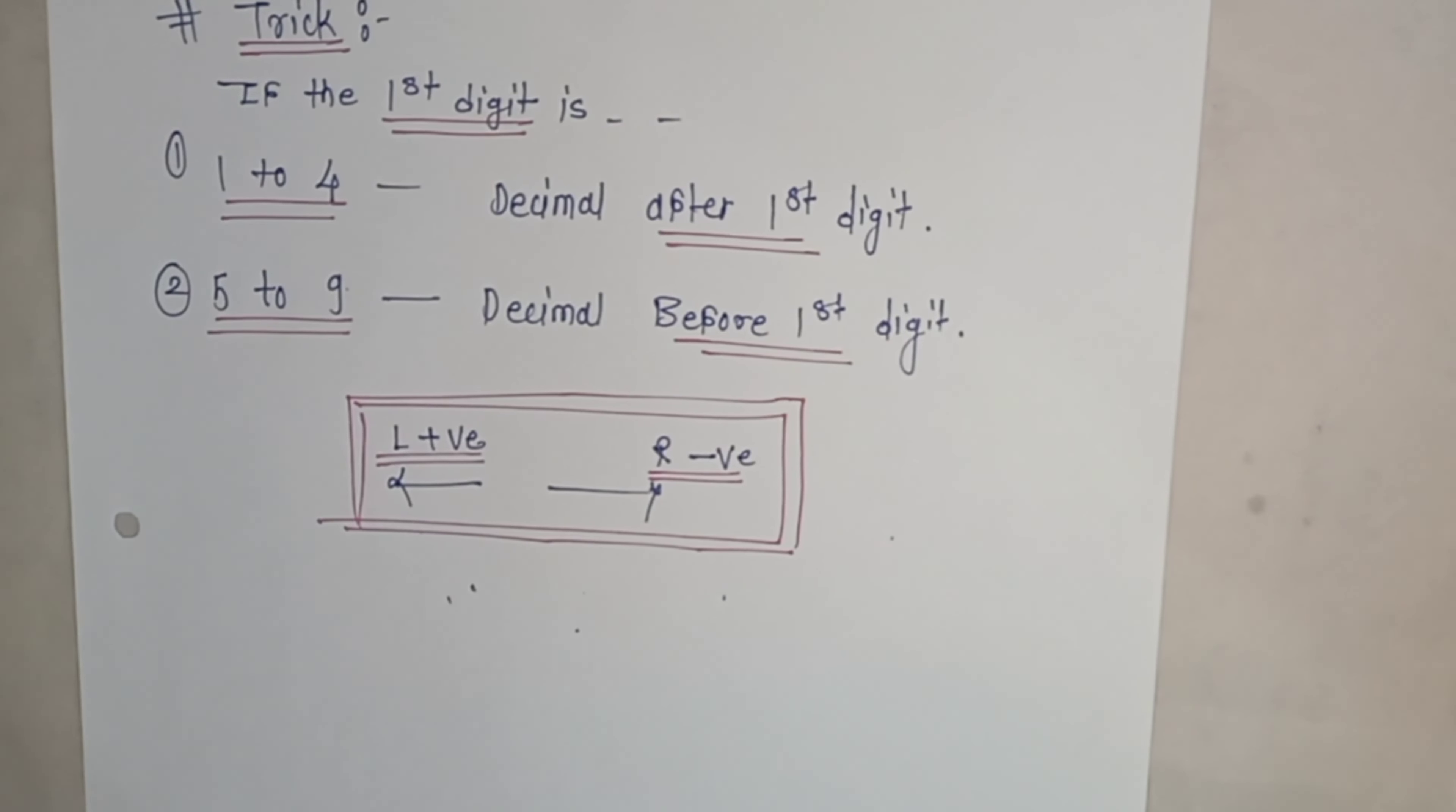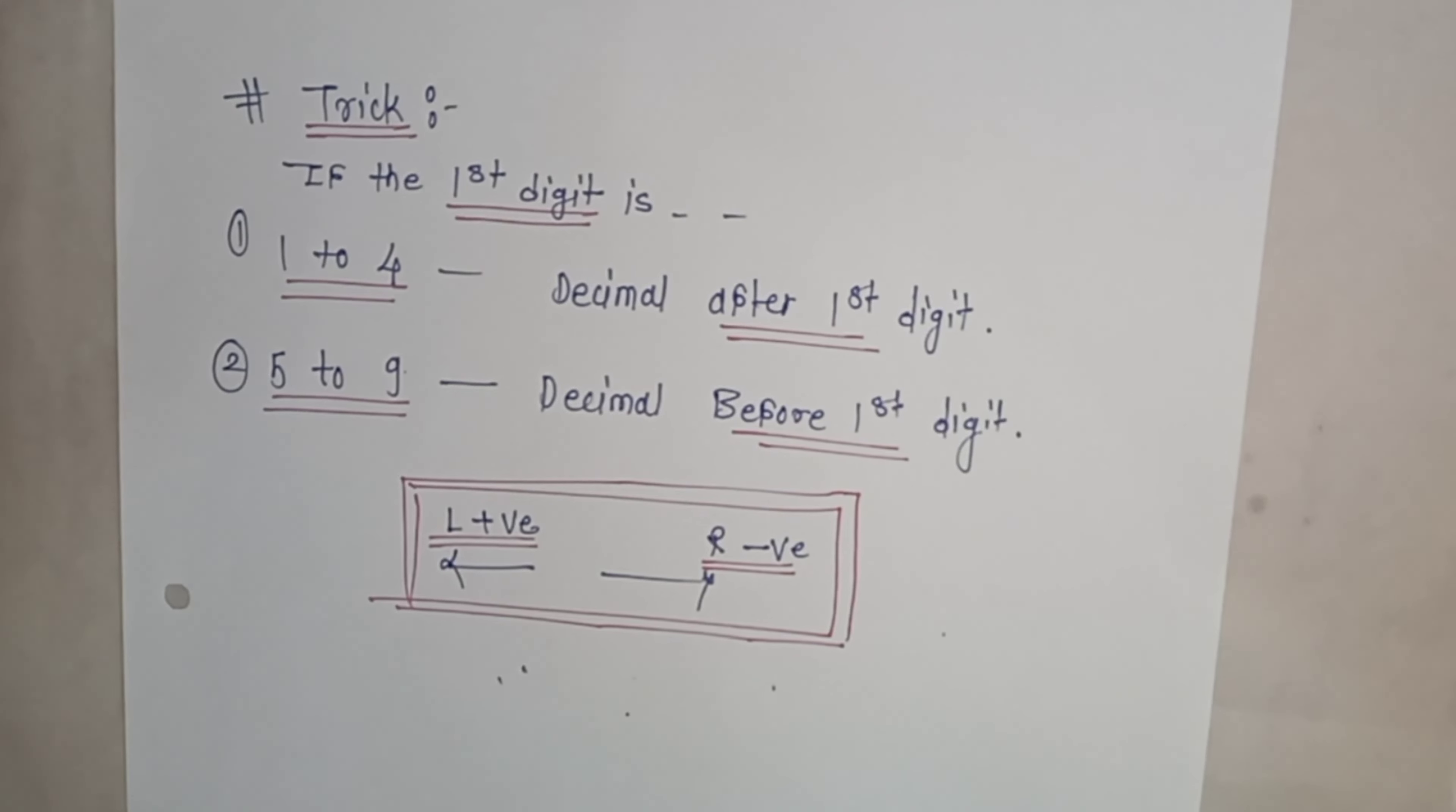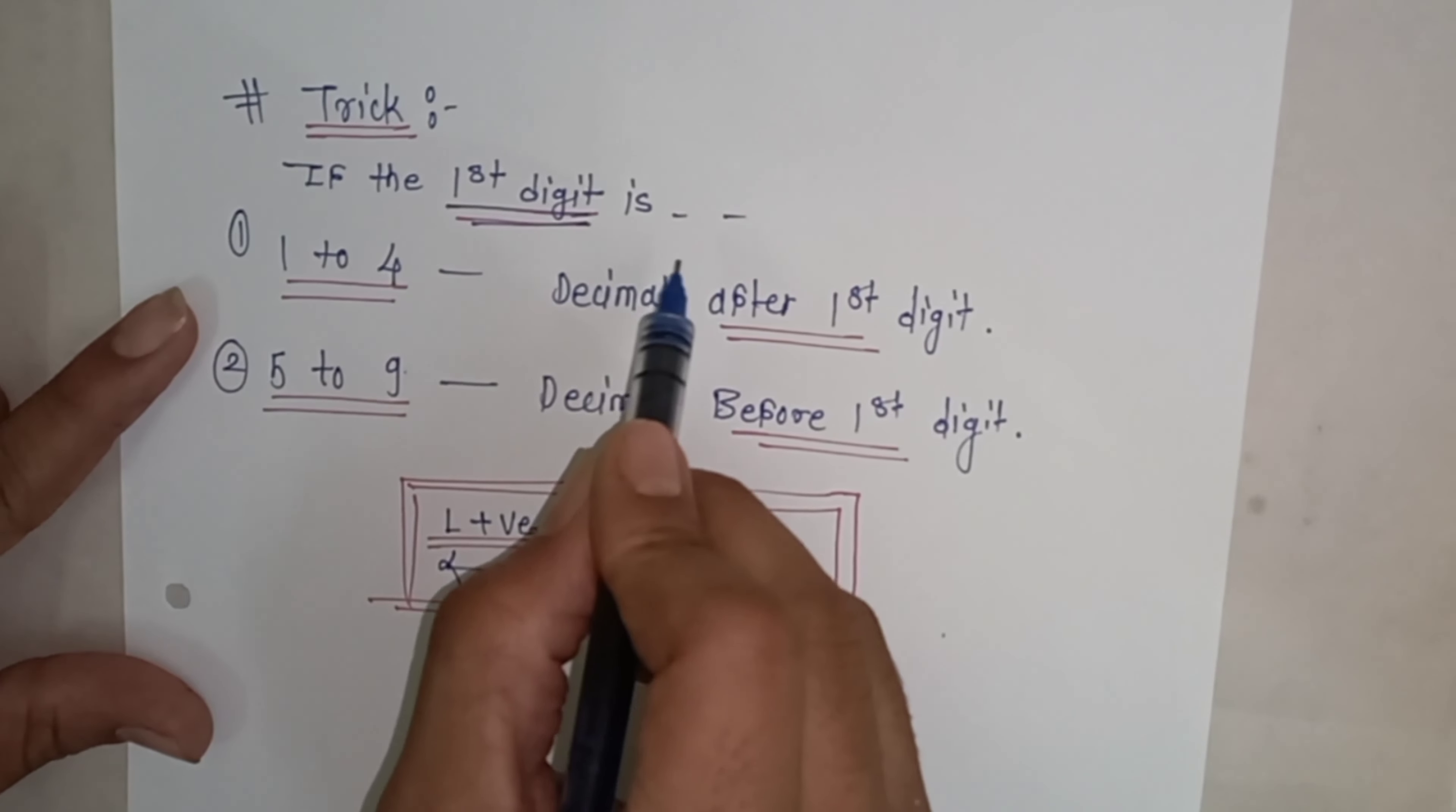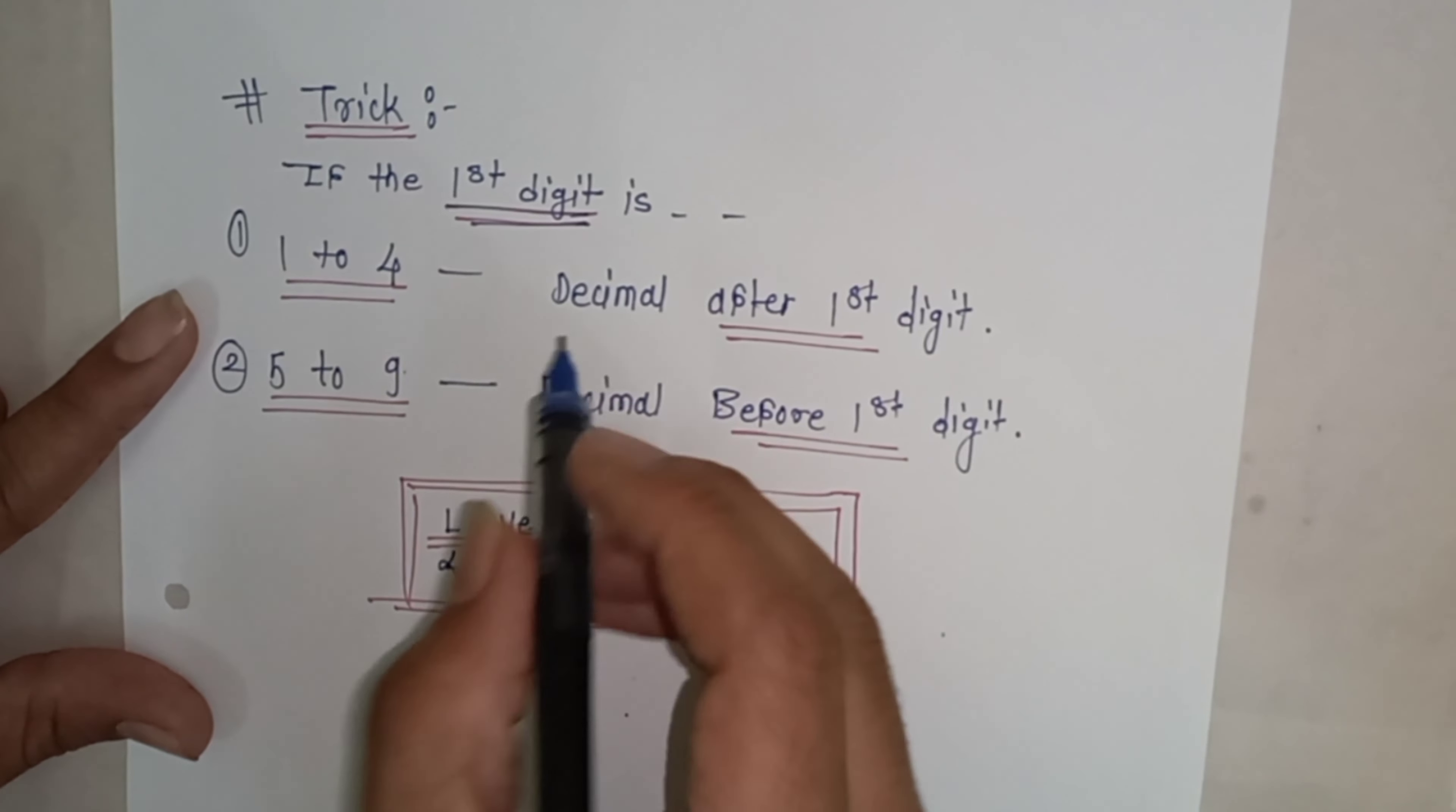Let's check what exactly is order of magnitude, how to find it, and how to easily solve these types of questions. To find power of 10 or order of magnitude, there are basically two conditions. The first trick: if the first digit is between 1 to 4, that is 1, 2, 3, 4, then give the decimal after the first digit.